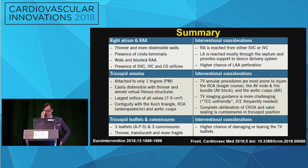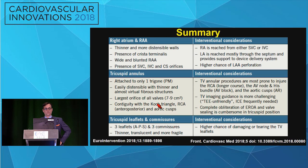A nice summary: the right atrium is thinner and more distensible. One important difference is that we don't go through a septum for tricuspid procedures, so the device isn't anchored by the septum — which makes it easier to dive and you have less coaxiality. The tricuspid annulus is much bigger and more distensible than the mitral; you have three leaflets, and the leaflets are thinner and more fragile, making them easier to tear.